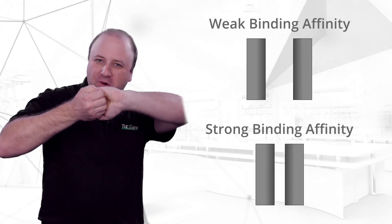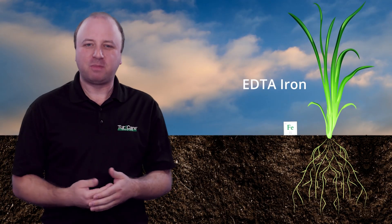Of the three chelated irons listed, EDTA iron is by far the most commonly used in the industry. This is because it has a relatively weak binding affinity, which means it releases its iron relatively easily so plants can take it up. So why do we use chelated irons at all? Simply put, they are 100% soluble and provide plants with a relatively quick green up, typically within only a few days of application.